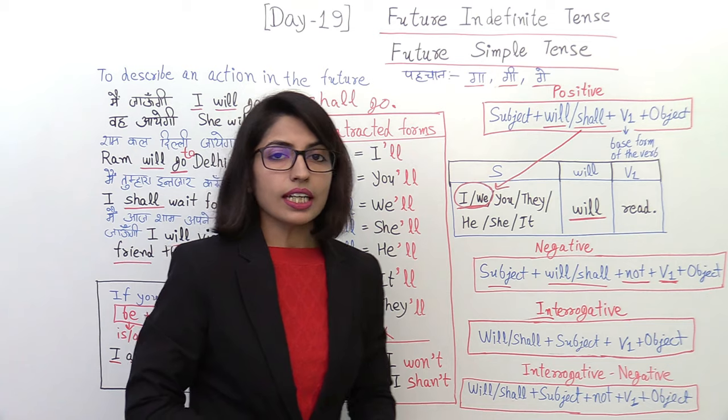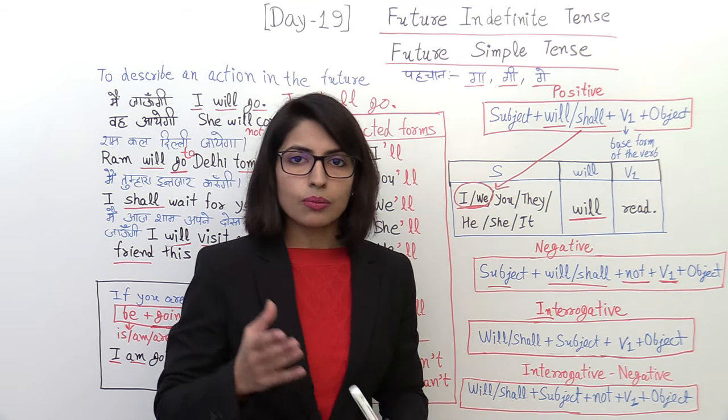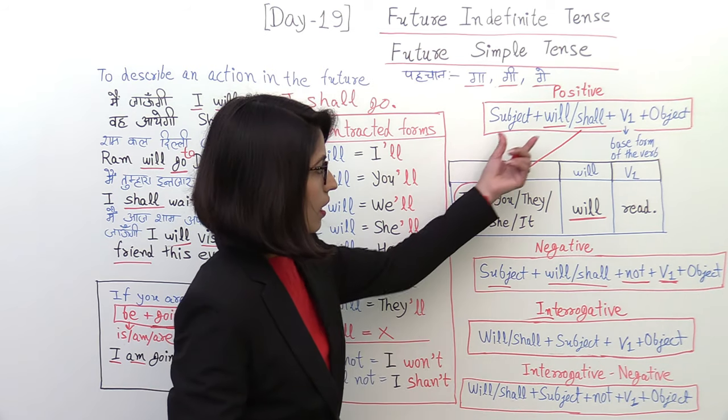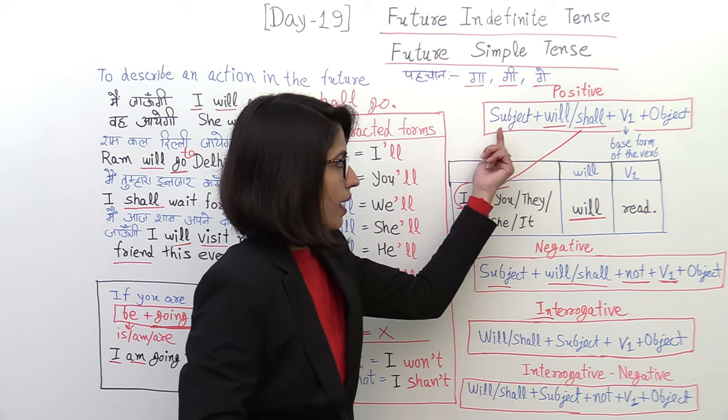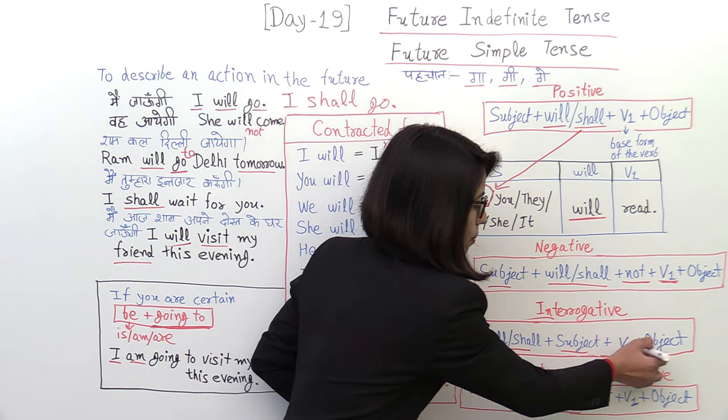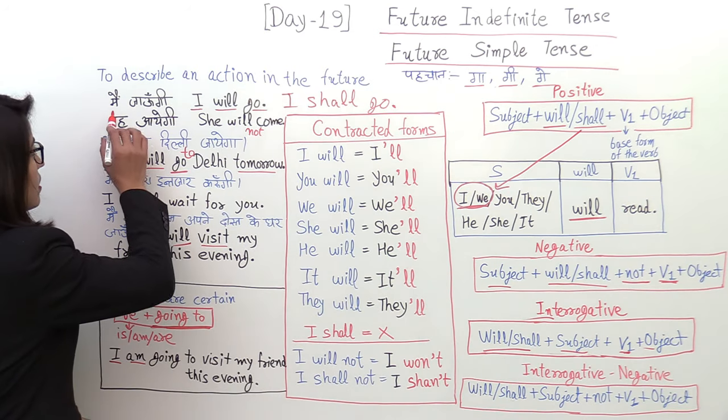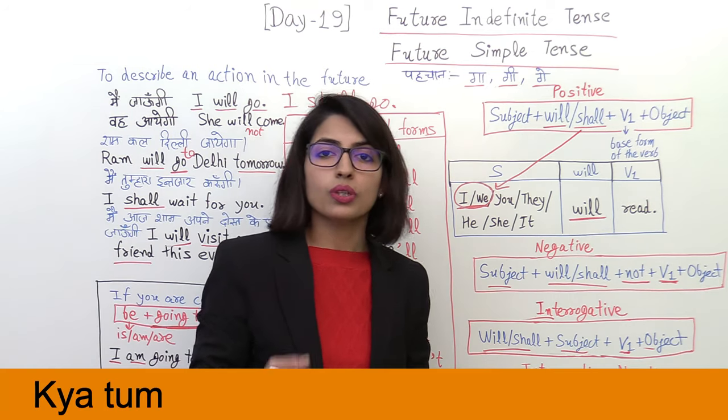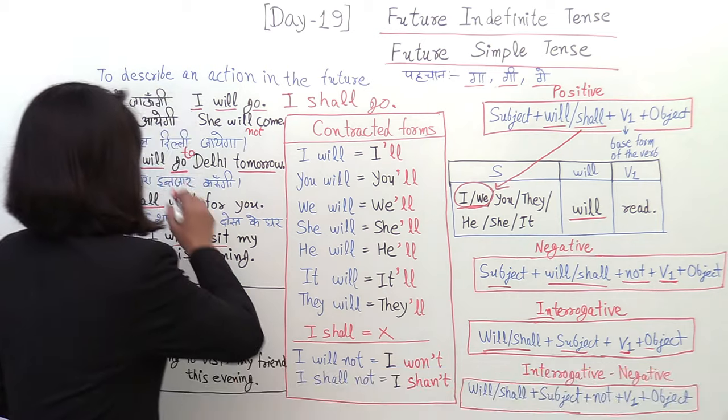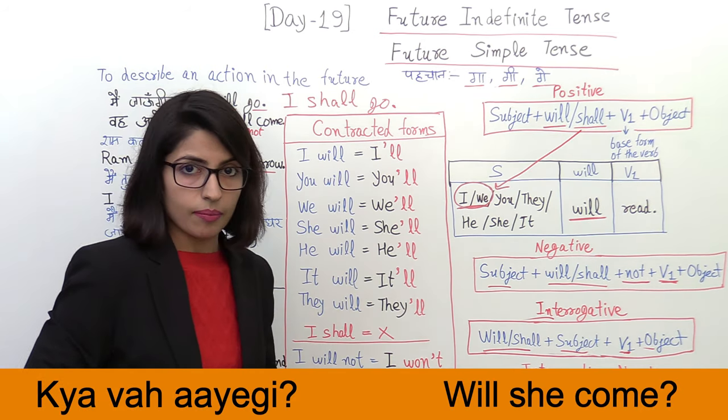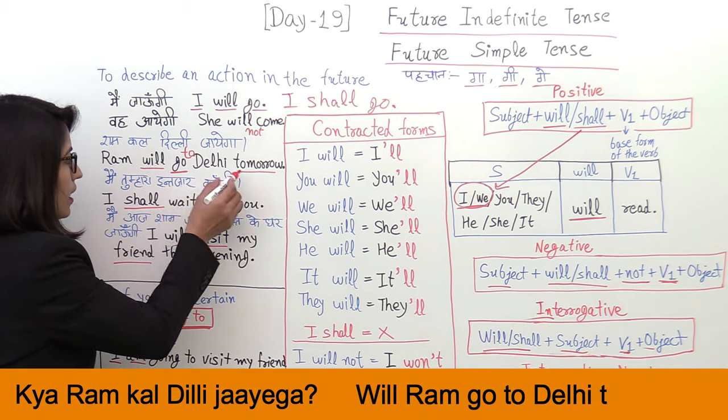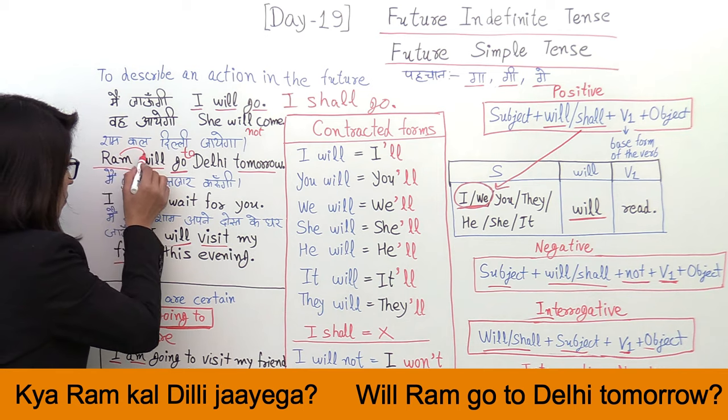Now let's see interrogative sentences. What is interrogative structure? In interrogative sentences, the helping verb comes first. Or you can understand it this way: we exchange them. So will or shall, then subject, then we want the first form, base form, then the other things. Will I go? Will you go? Will she come? Will Ram go to Delhi tomorrow? The will and Ram exchange.